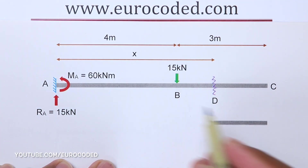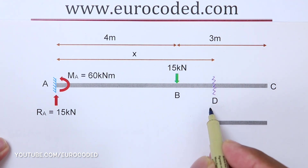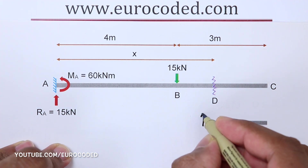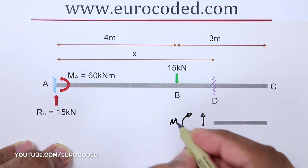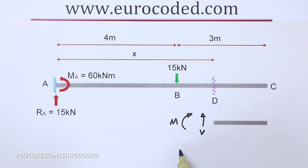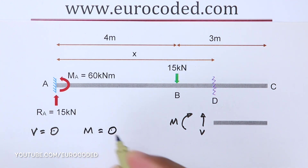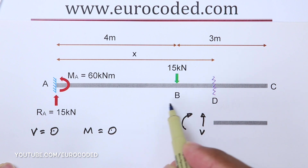Now it is time to look at the rest of the beam — in other words section BC of this cantilever beam. As before, I am going to take an imaginary cut at point D and draw a free body diagram. We have a shear force V and a bending moment M, however in this case there are no other forces acting on this beam section from D to C. So for vertical equilibrium V equals 0, and taking moments about any point on this section M equals 0 as well. Therefore both the bending moment and shear force are equal to 0 for any given point beyond point B.